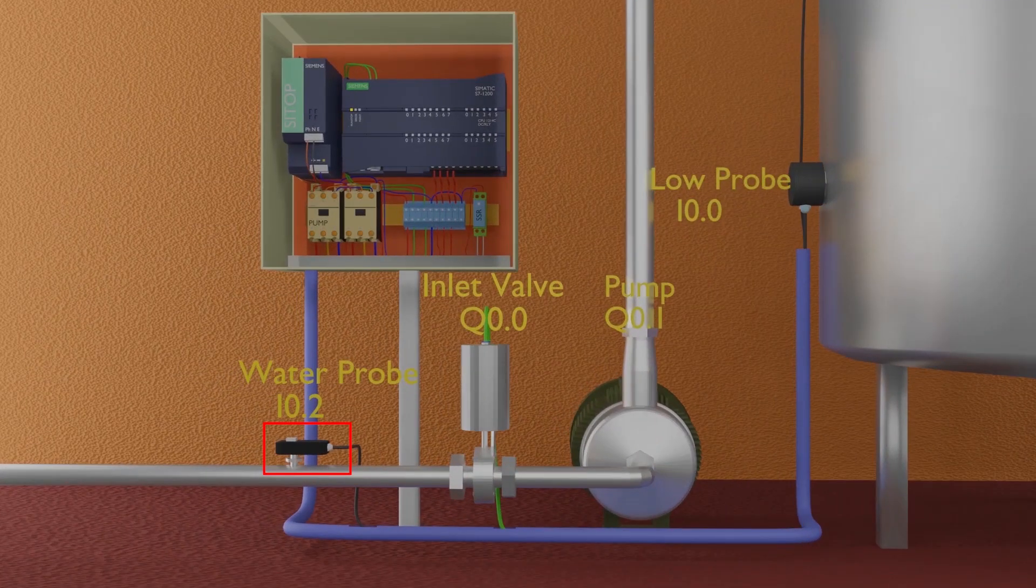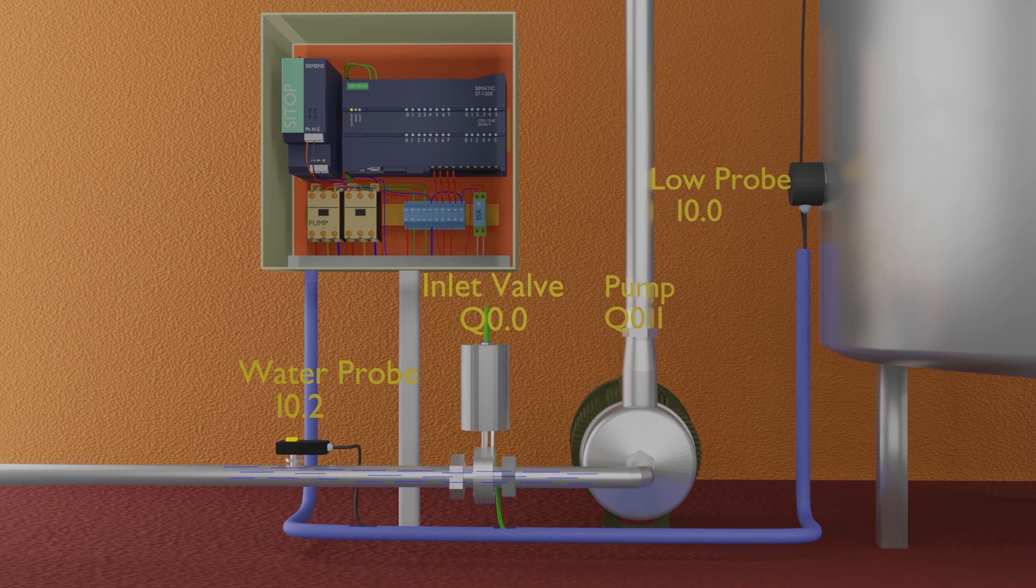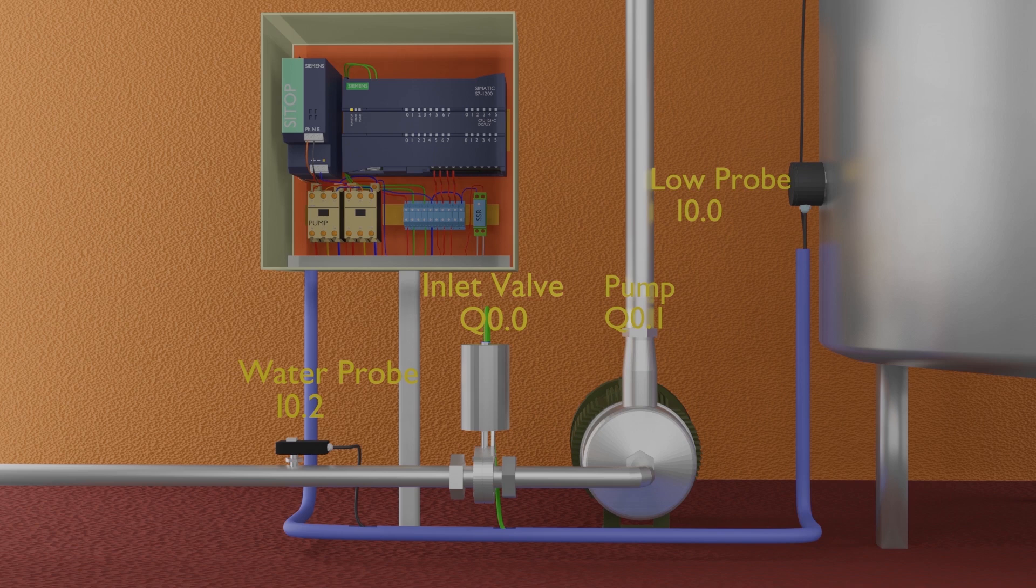There is a water level probe I0.2 installed on the water inlet line to detect the water. Water probe is usually installed on inlet supply pipe of the pump to avoid the dry running of the pump, it could heat and damage the pump shaft seals.